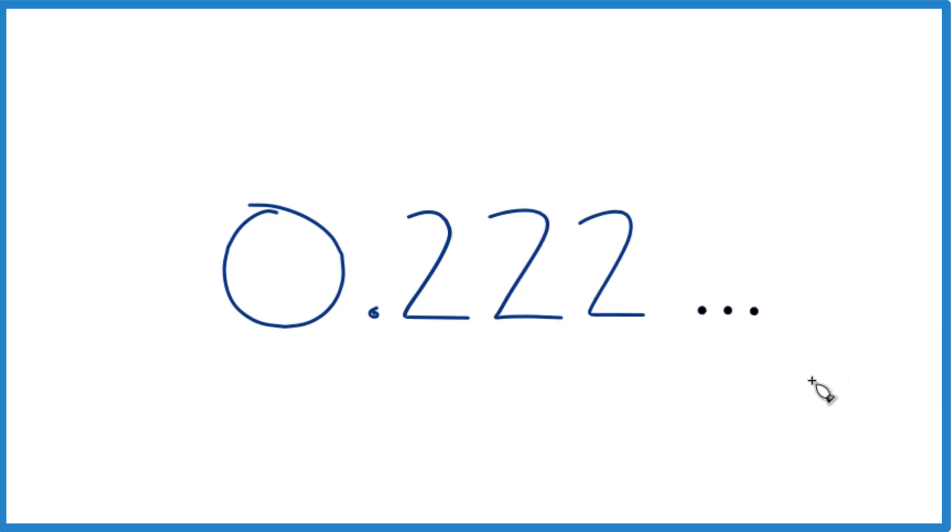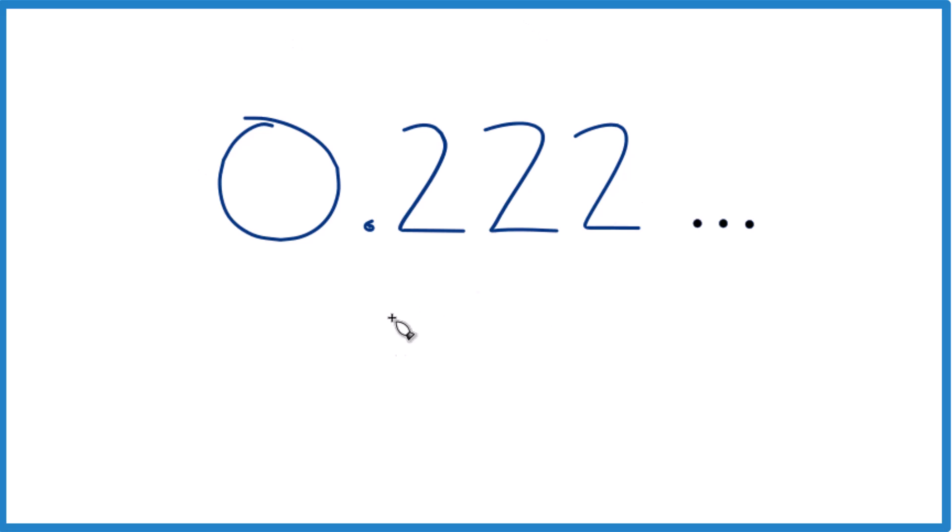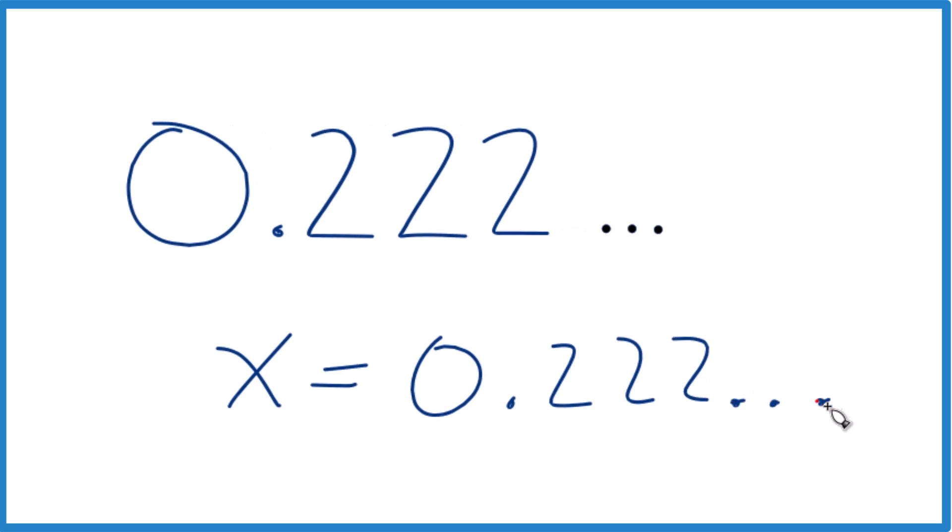So let's convert this decimal, we have 0.222 and it just keeps going, to a fraction. And here's how we're gonna do it. We could take and just call this X, so X equals 0.222 and it's repeating.